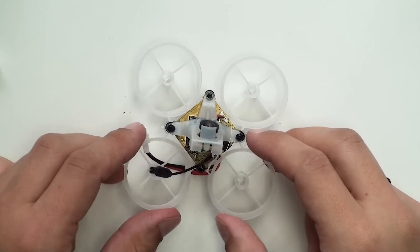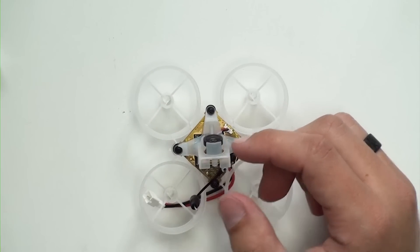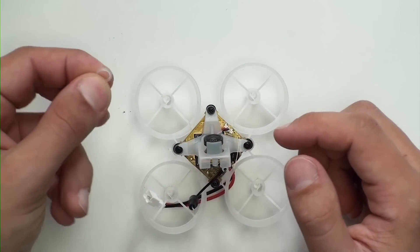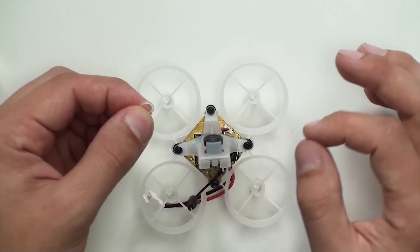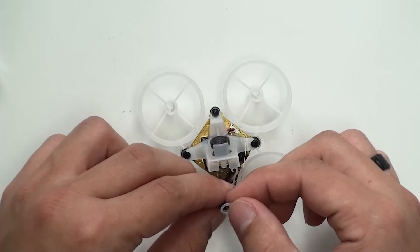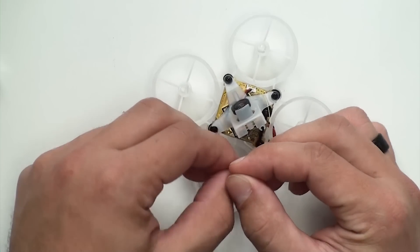Now we're going to do a little trick that helps secure the camera and the antenna in the event of crashes. Take one of the extra rubber bands from the kit. We give you five: four for the motors and one extra. Take this extra one and first put it through the antenna like so.